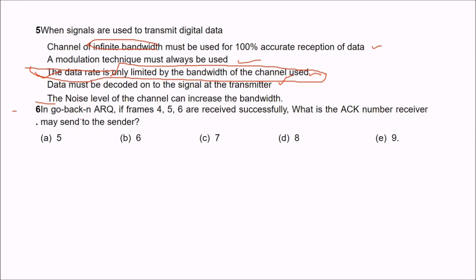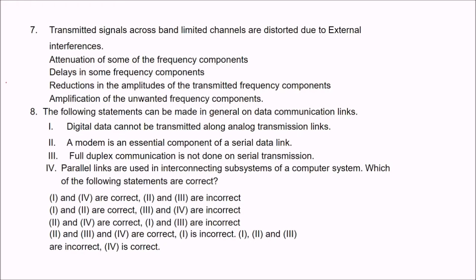The next question: in Go-Back-N ARQ, if frames 4, 5, and 6 are received successfully, what is the ACK number the receiver may send to the sender? The answer is 7, because frames 4, 5, and 6 were received, so the next expected frame — acknowledged as ACK 7 — is sent back.